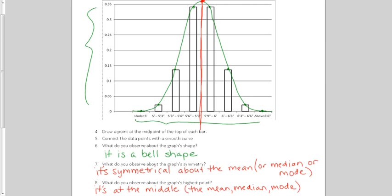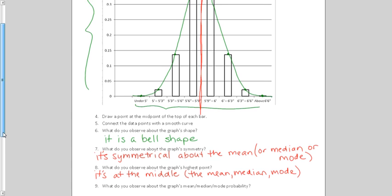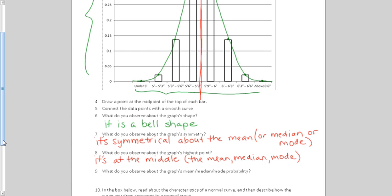So this curve is what we consider a normal curve. Last question down there. What do we observe about the graph's mean, median, and mode probability? They are all the same.